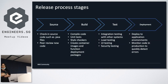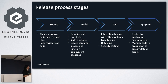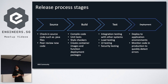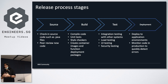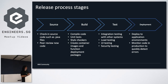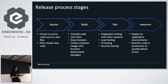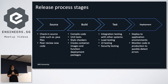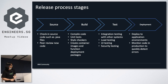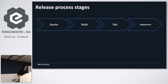In CI/CD, there are a couple of stages — these are called release process stages. These are the minimum stages. First we have source: when we check in source from our Git repository. Then we build the source: compile the code, run unit testing, and if running on containers, do the Docker build and push to the image repository. The next stage is integration testing — load testing, UI testing, security testing, any kind of testing. The last stage is deployment: deploy the applications to any kind of environment — UAT, staging, client staging, and so on.